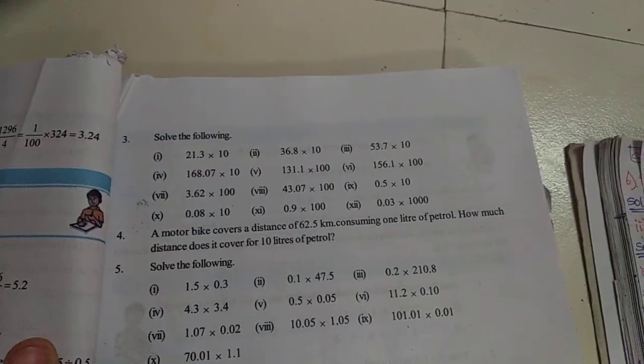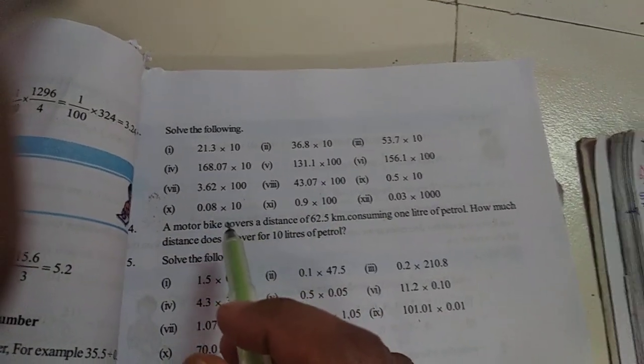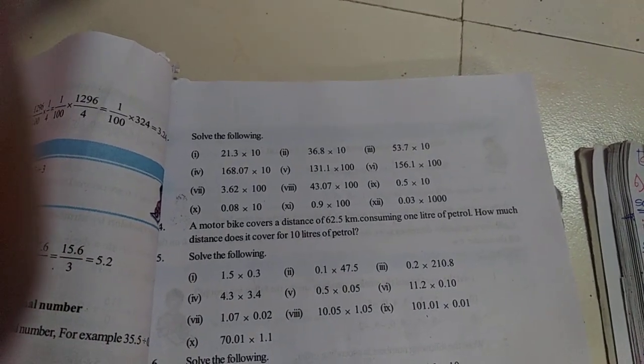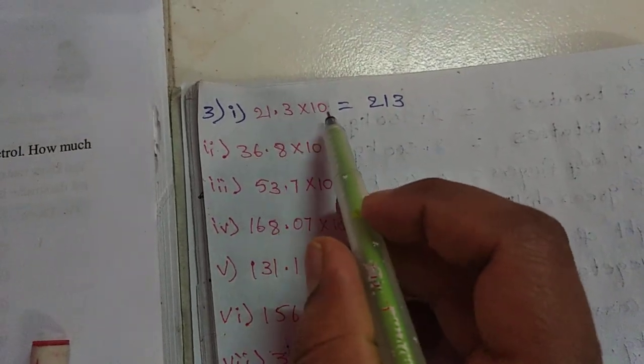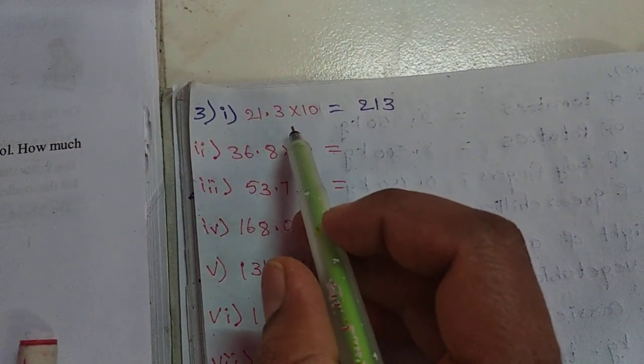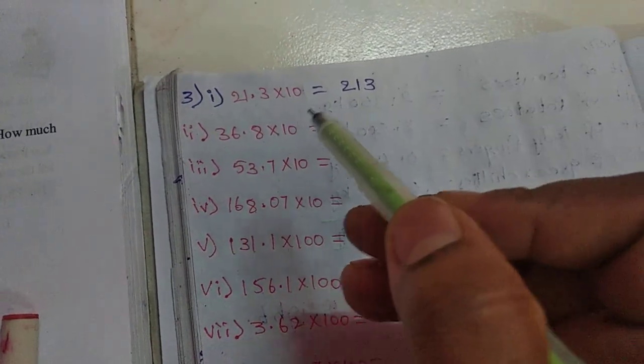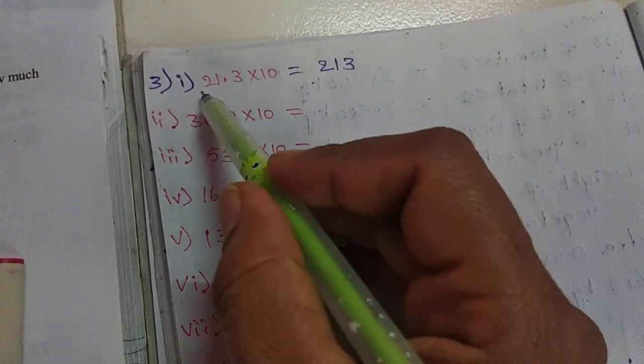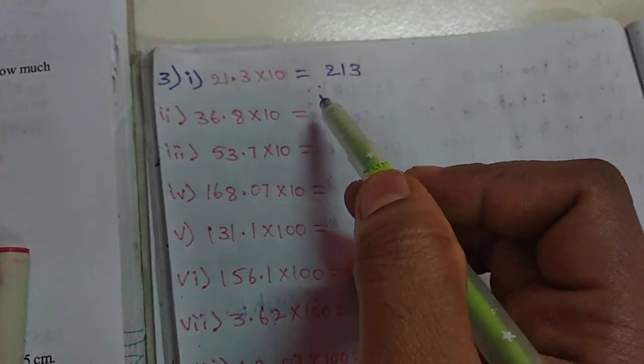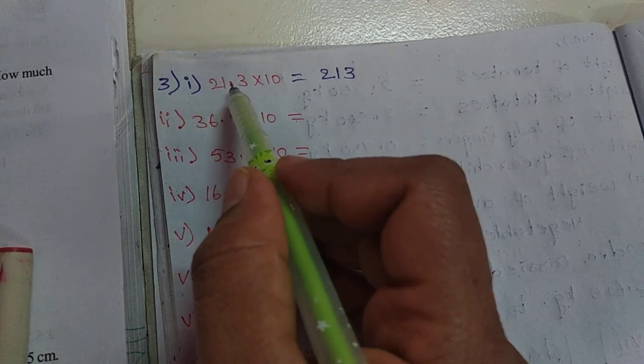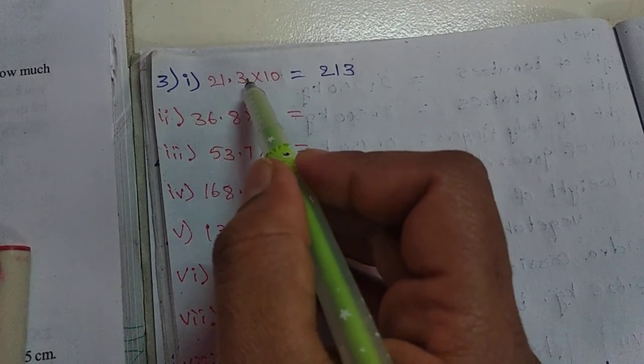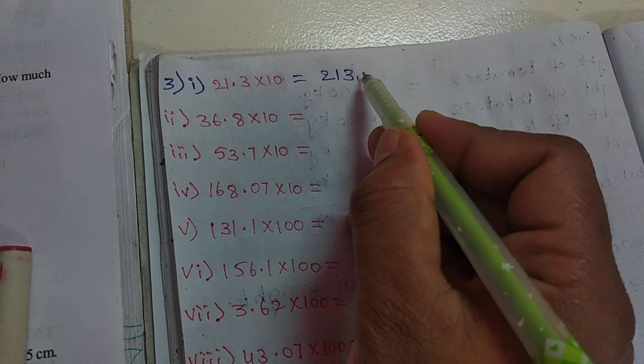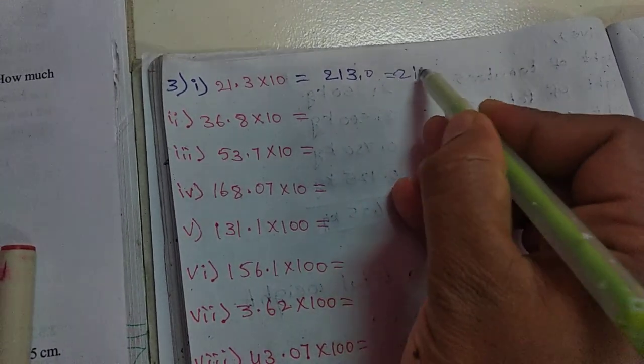Third problem: solve the following. Here we have some multiplications. I will show you how to solve. When we multiply by 10 or 100, how to solve. See this first one: 21.3 into 10. When we multiply by 10, 100, or 1000, instead of normal multiplication, I'll show you a direct method. First, copy that number as it is.